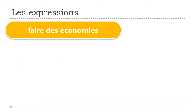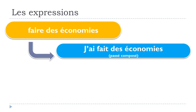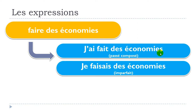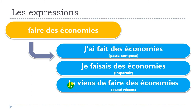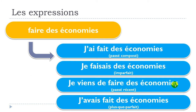Let's see now how the expression faire des économies works in the past tenses. The first one is le passé composé: j'ai fait des économies. Then l'imparfait: je faisais des économies. Le passé récent: je viens de faire des économies. And le plus-que-parfait: j'avais fait des économies.